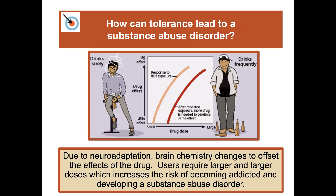How can tolerance lead to a substance abuse disorder? Due to neuroadaptation, brain chemistry changes to offset the effects of a drug. Users will require larger and larger doses, which increases the risk of becoming addicted and developing a substance abuse disorder. You start needing more and more to have the same effect, which leads to the development of a substance abuse disorder.